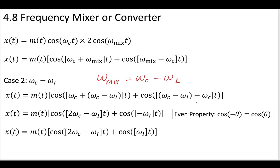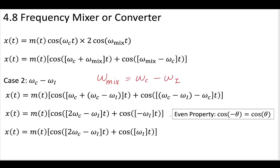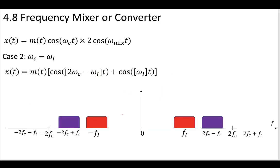We mix them together, get this multiplied wave, put it through a bandpass filter, and out pops a message modulated by our intermediate frequency. We saw that for the first case, which was omega_c plus omega_i, and now we're in the second case. When we mix them, we again apply that trigonometric identity. We can simplify using the same identity and apply the even property, because we have omega_c minus omega_c — that cancels — but we're left with a negative omega_i. So by the even property, we are left with these two terms.